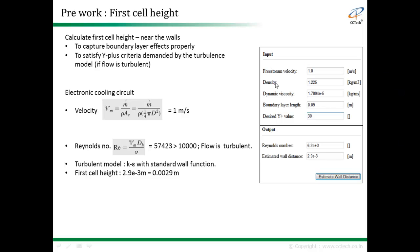We input the free stream velocity, density, viscosity, and approximate length for the boundary layer. We also enter the y plus value, which is restricted by the turbulence model. For wall functions, the desired y plus value is around 30.